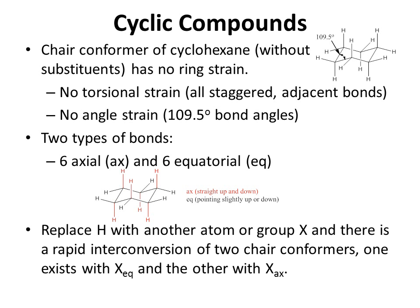If you replace a hydrogen atom with another atom or group X, there is a rapid interconversion of two chair conformers — one with X in the equatorial position and one with X in the axial position. This occurs because of the twisting of the chair conformation from one chair into the other. When that chair twisting occurs, a group X that is equatorial becomes axial, and vice versa.